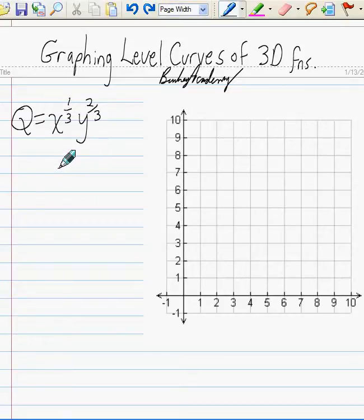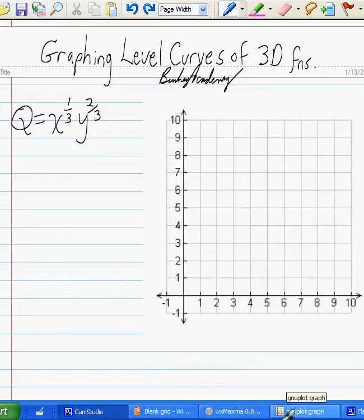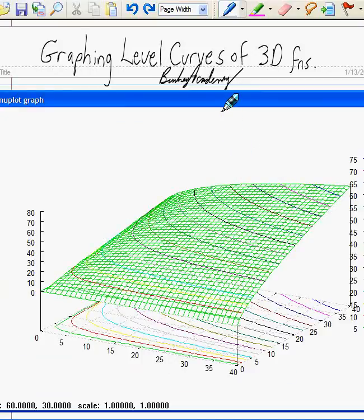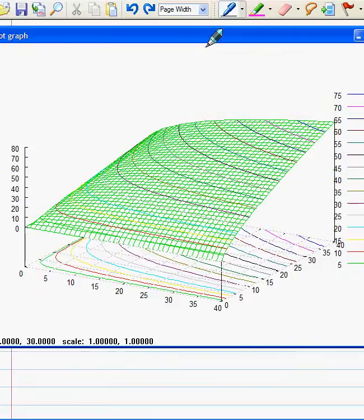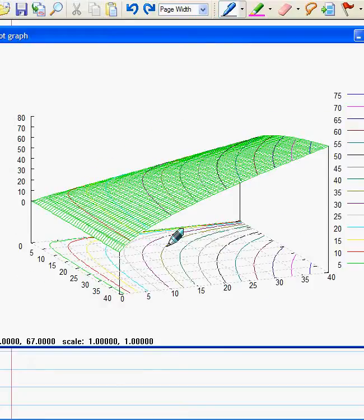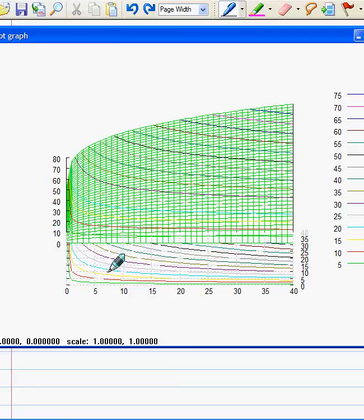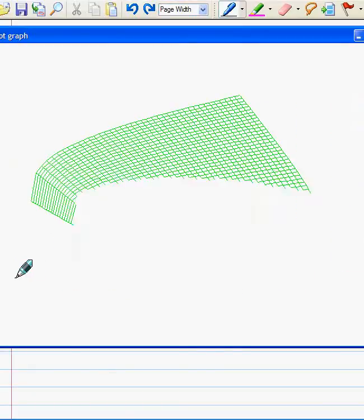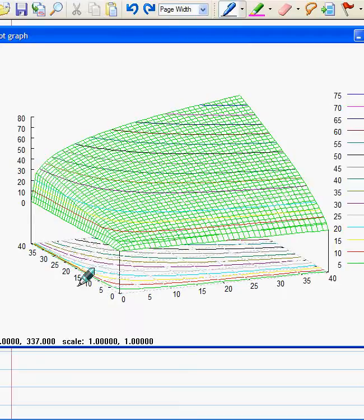Now what does this function look like? Let me bring up a little three-dimensional representation of this particular function here so we can look at it. Here's the x-axis down here and the y-axis, let me spin it around, is going up the side. The left side here is the y and the x is over here.